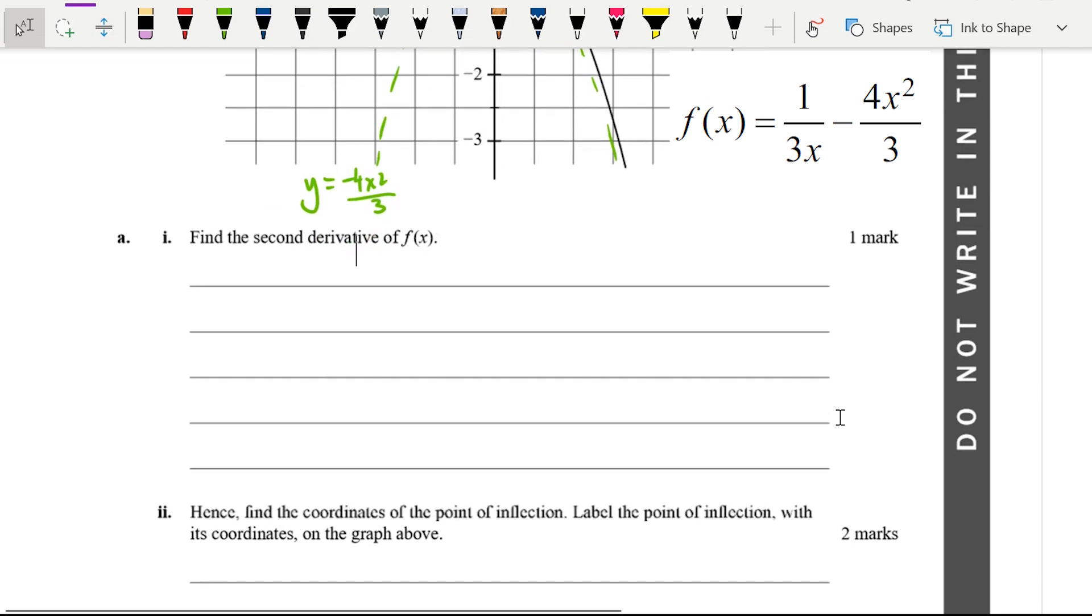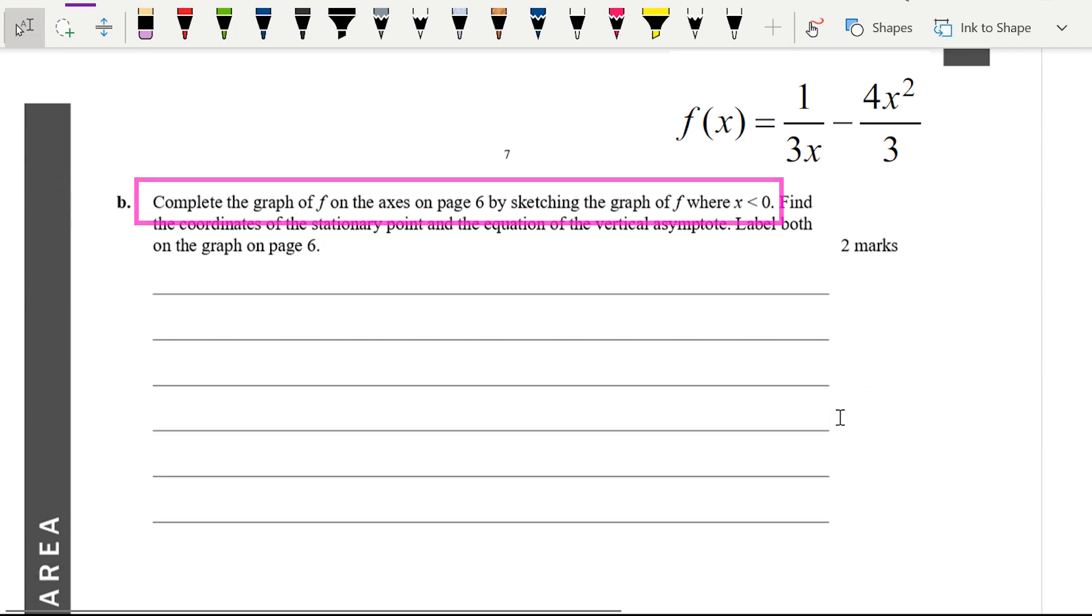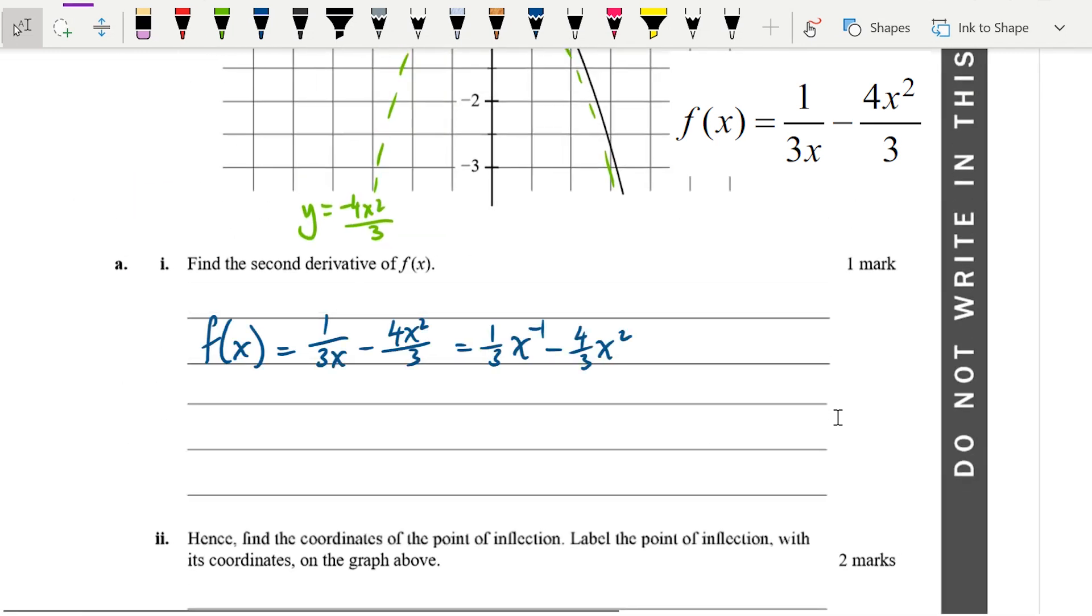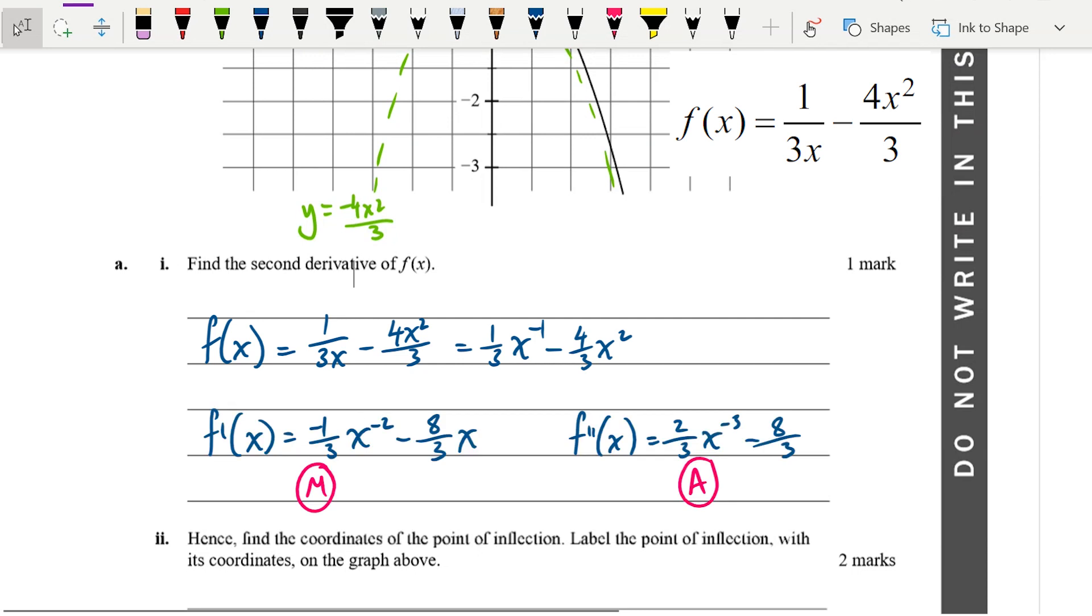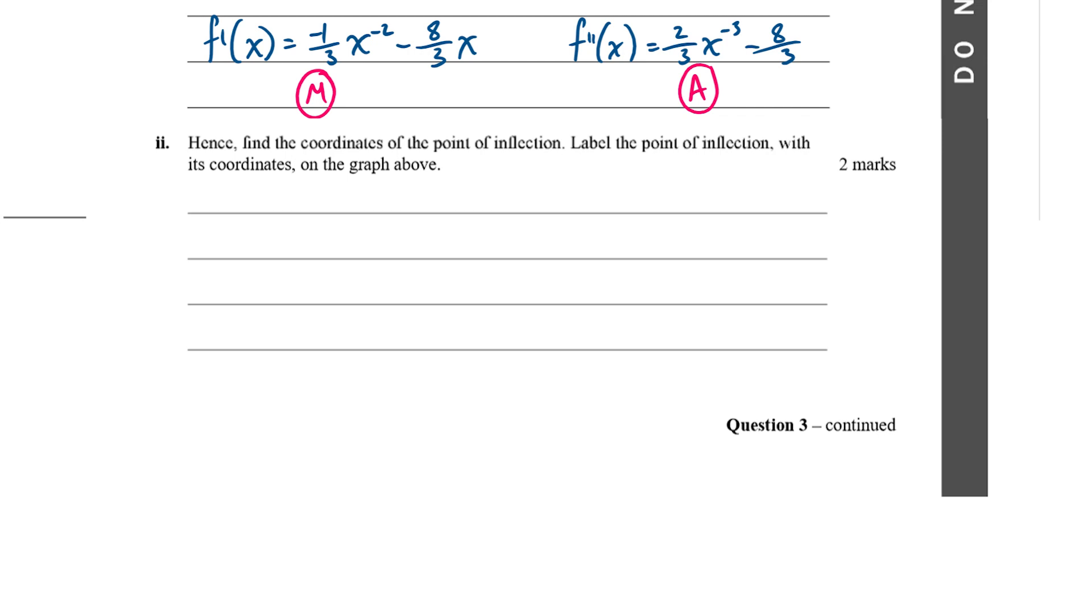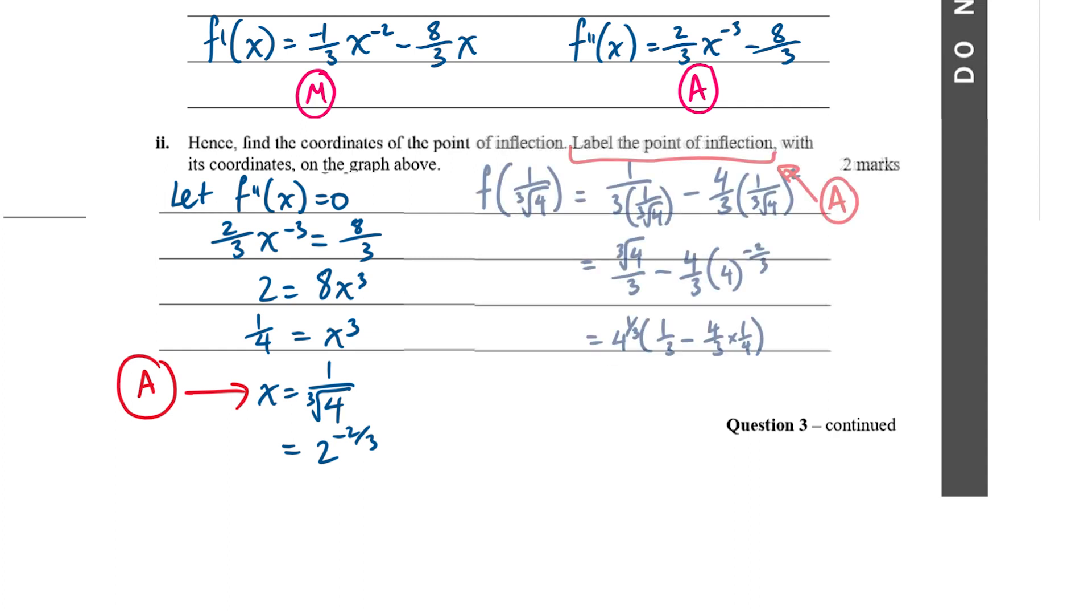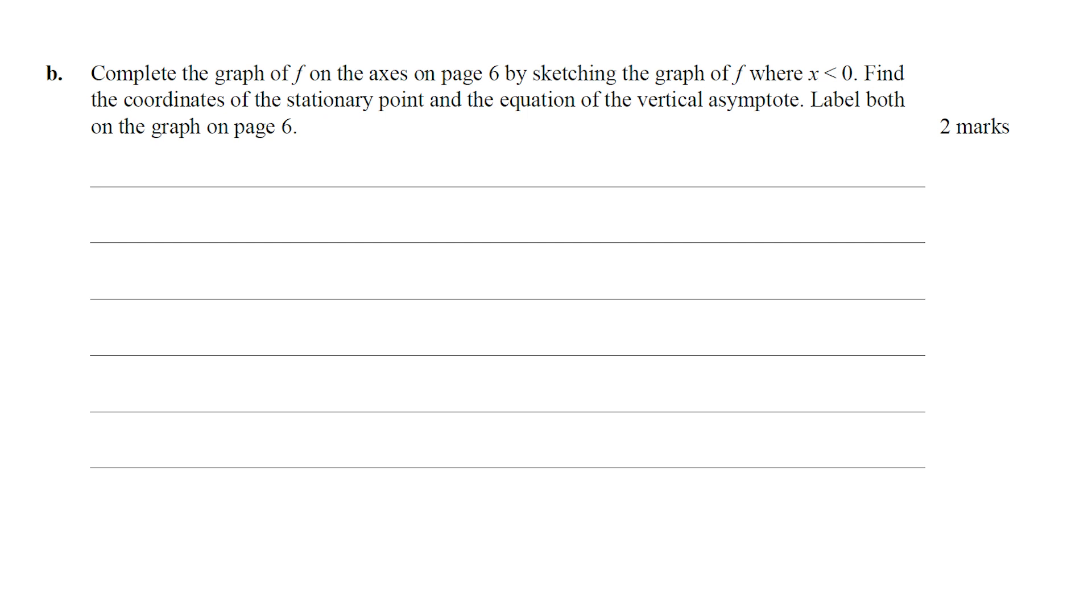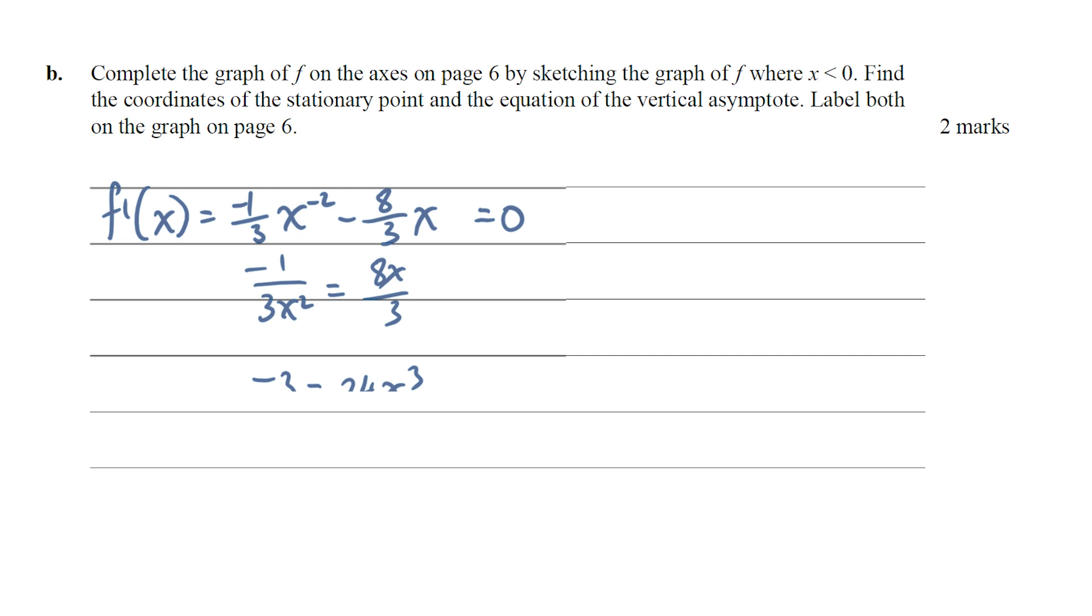This question was kind of interesting because they gave you half of the graph and then later on asked you to sketch the other half. But first they asked you to find the second derivative, so that's just a calculus question. Just be careful with the negative indices and things to get the second derivative. You want to have that right because the next question is hence find the coordinates of the point of inflection. We're going to set that second derivative to be zero and solve for x. We get something which is an exact value as 4 to the power of negative one third or 2 to the power of negative two thirds. The tricky thing about this question was actually subbing that back in and recognizing that when you do that, you actually get a y coordinate of zero because you had to label that point on the graph.